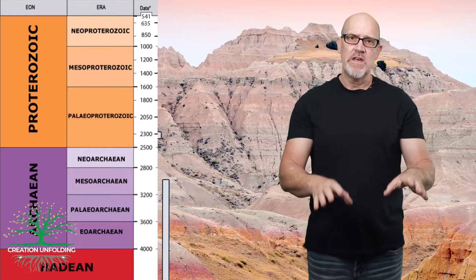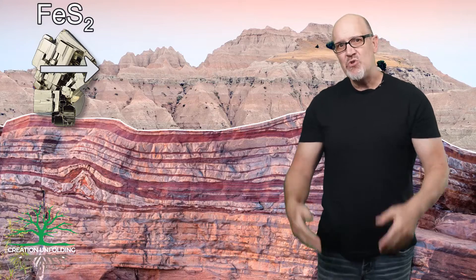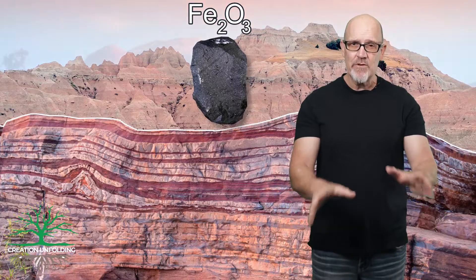This observation has caused a number of scientists to propose a link between the red beds and BIFs. According to the secular model, atmospheric oxygen peaked to about 10% of today's level during the Great Oxidation Event about 2.3 billion years ago. At this level, atmospheric oxygen began to interact with non-oxidised and unstable minerals like pyrite and chemically altered them into iron oxides such as hematite, which gives the sedimentary sandstones, siltstones, and shales their red colour.